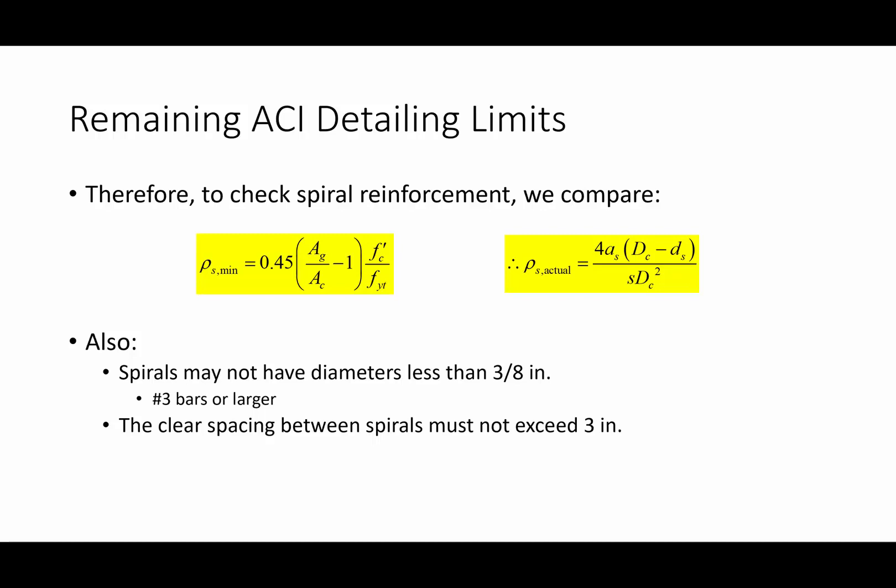There are a couple of other ACI requirements. You can't have a spiral bar smaller than a number three — most number threes are pretty common for spirals. The clear spacing, or pitch, can't exceed three inches. So you provide a lot more spiral reinforcement than you would with ties.